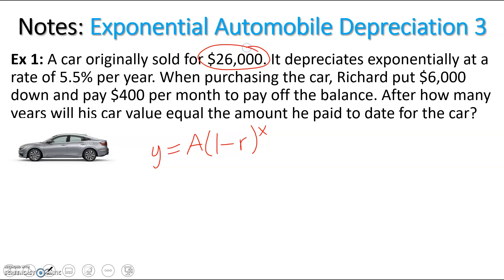So we know the car was originally sold for $26,000, that's our value for A. We know this was decreasing at 5.5%, that's our value for r. So our equation is y equals 26,000 times 1 minus 0.055 to the power of x.